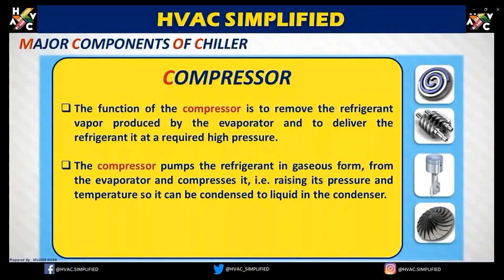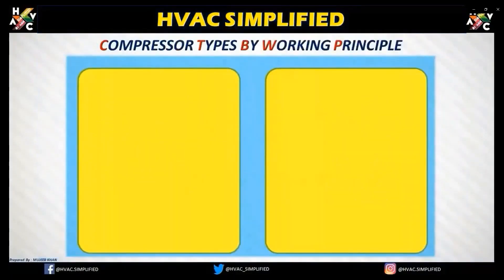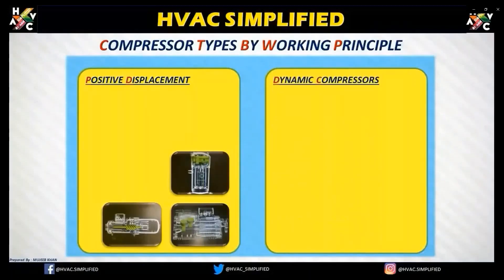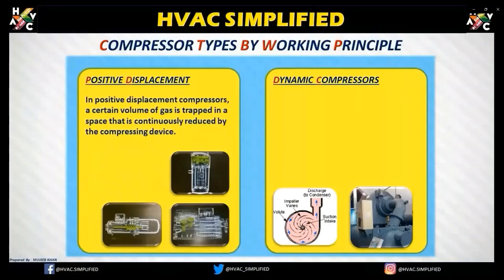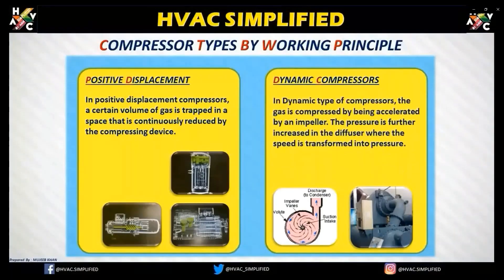I recommend you review the refrigeration cycle to understand what a compressor does in a complete refrigeration cycle. There are two major compressor types: positive displacement and dynamic displacement. In a positive displacement compressor, a certain volume of gas is trapped in a space that is continuously reduced by a compressing device. In a dynamic type, gas is compressed by being accelerated by an impeller, and the pressure is further increased in the diffuser where speed is transformed into pressure.